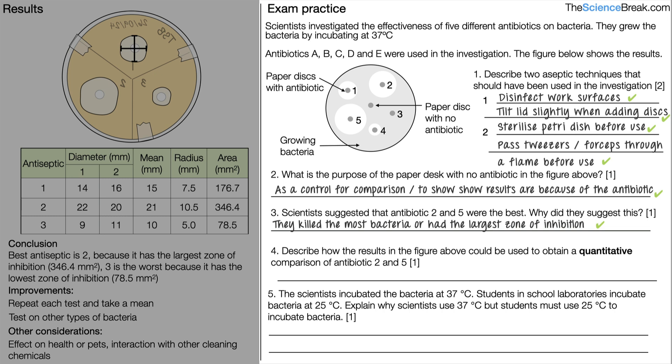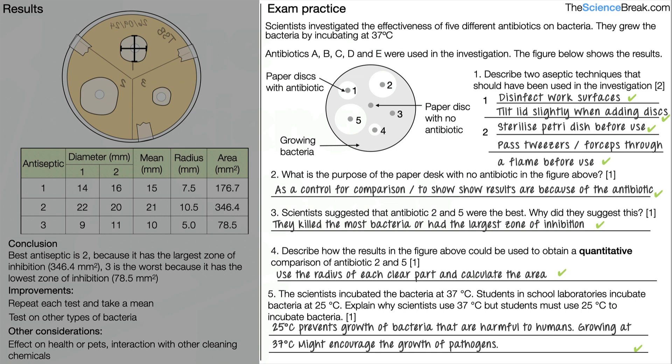Question four: describe how the results could be used to obtain a quantitative comparison of antibiotics 2 and 5. In question three we used a qualitative measure — just looking at the size of the areas. For quantitative values, we need numbers, so the answer is to use the radius of each clear zone to calculate the area using pi r squared, giving a numerical value for easier comparison. Question five: scientists incubated at 37°C but students must use 25°C. The answer is that 25°C prevents the growth of bacteria harmful to humans, whereas 37°C might encourage the growth of pathogens.